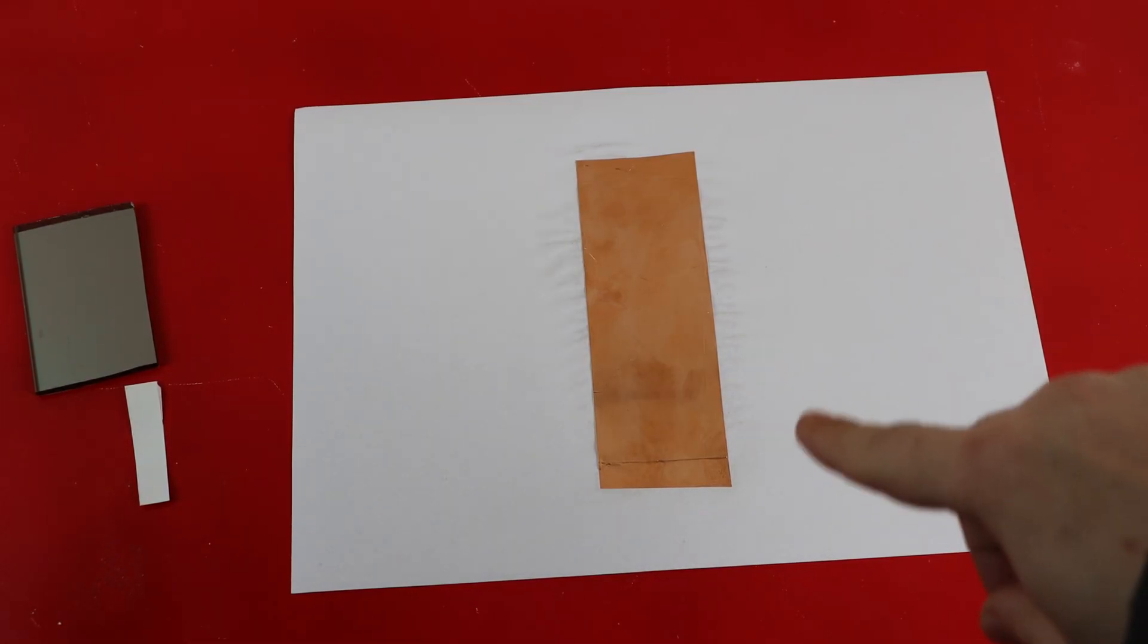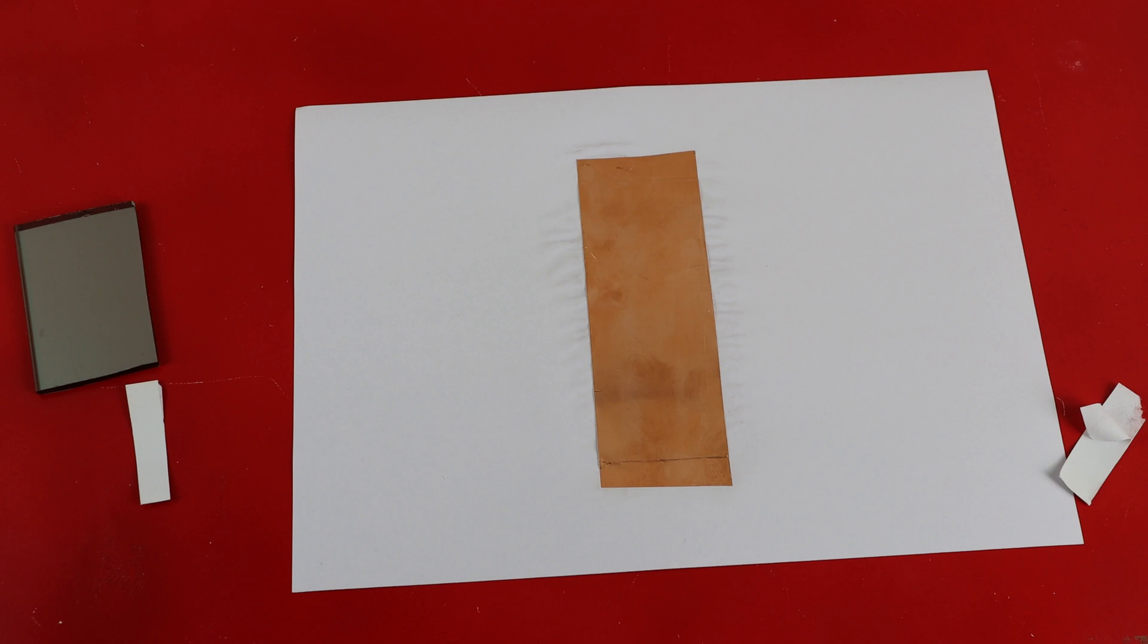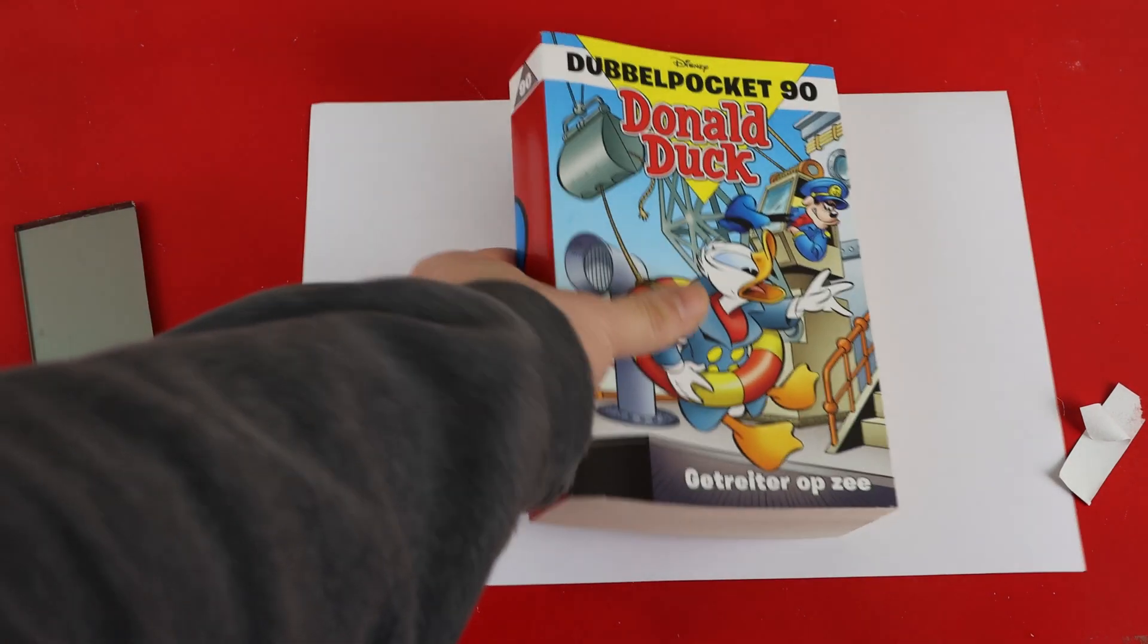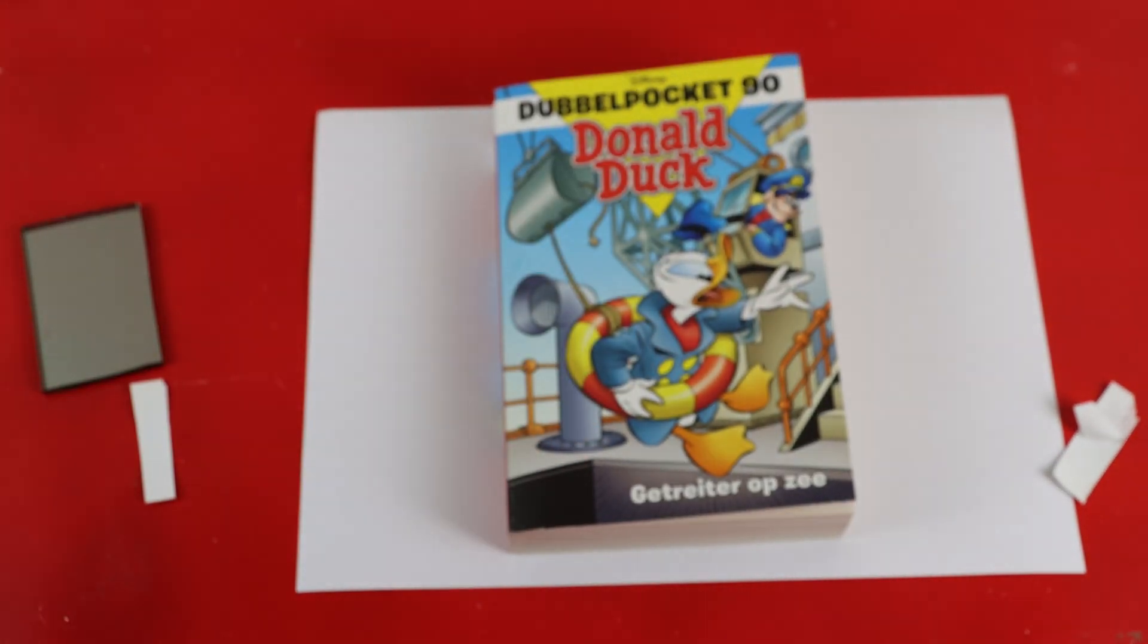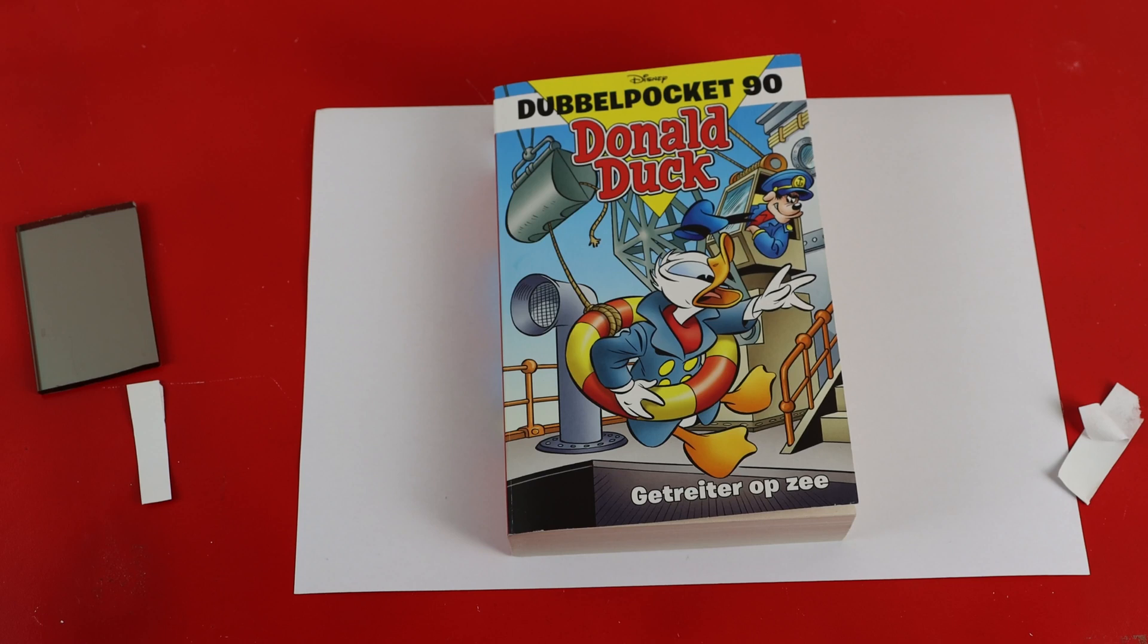The glue itself made the paper a little bit wavy and I want to avoid that as well. That's why I am putting a heavy book on the area and I will leave it like that until the glue is dried up.